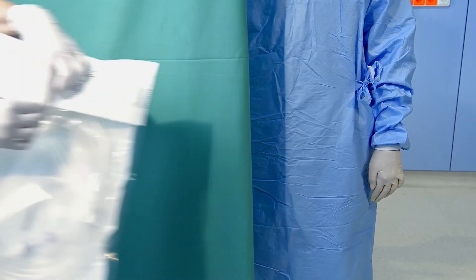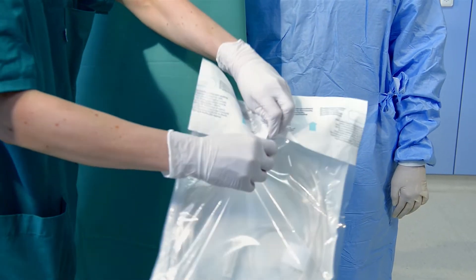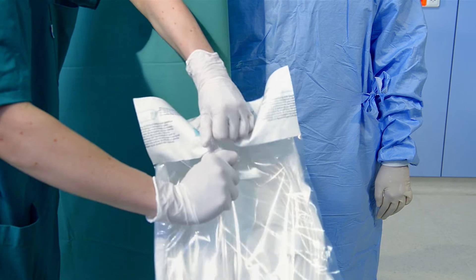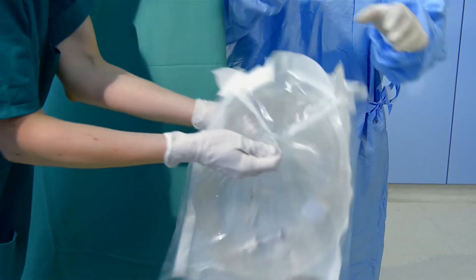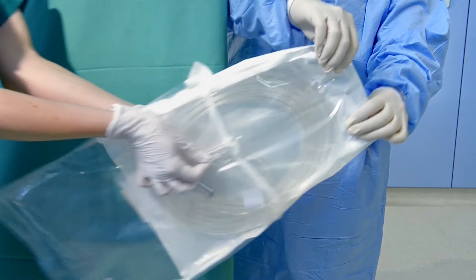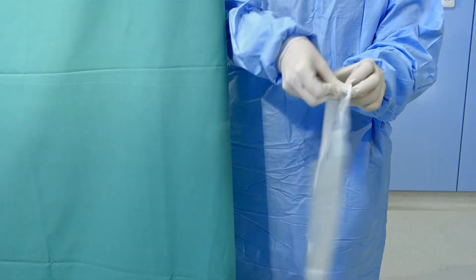The double lumen suction line must be unpacked and prepared at the sterile field. Open the outer packaging. The sterile nurse should take the inner sterile packaging without touching the outer blister pack.